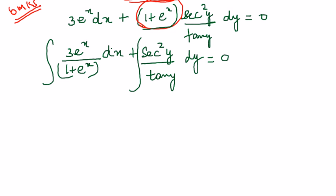Integrating we have this is nothing but 3 log(1 + e^x). How did I get log? Because I know that integration of 1/x dx is equal to log x. So instead of x I have here (1 + e^x) and e^x differentiation will be e^x. So I can write this integration as 3 log(1 + e^x).